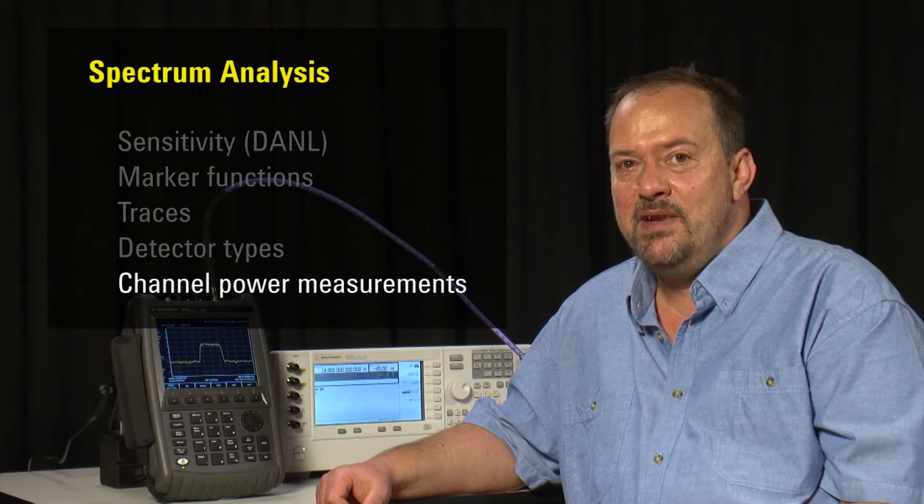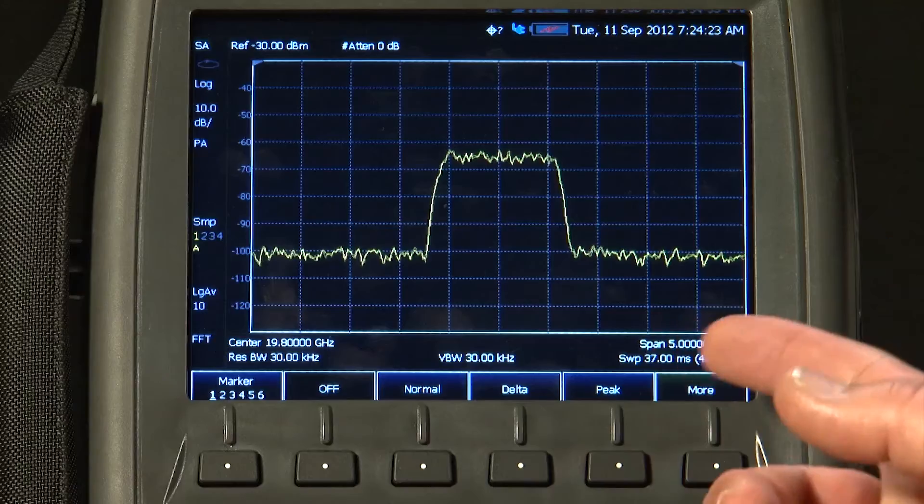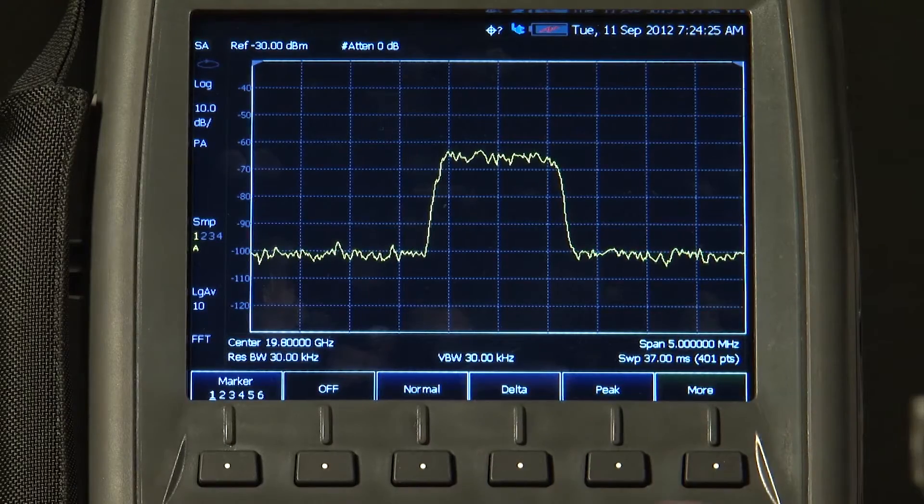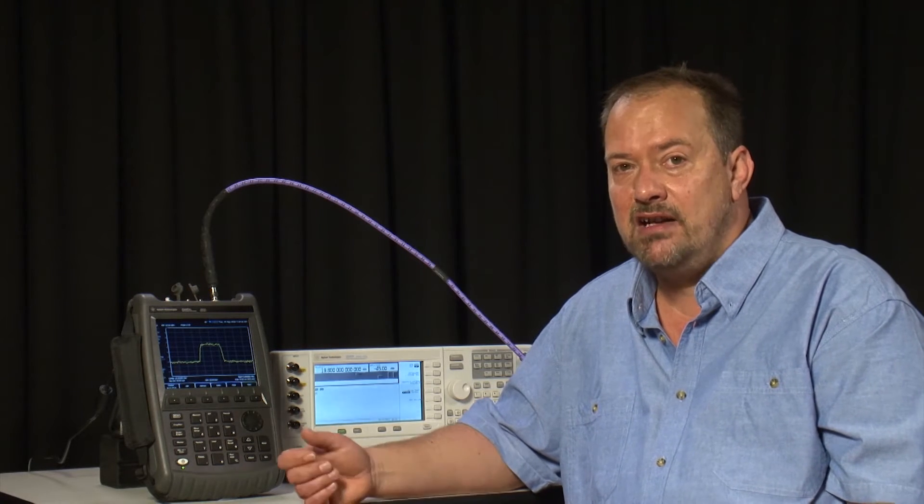Markers are great if we are measuring the amplitude of CW signals or their harmonics. But as you can see, I have now turned on some 16-QAM modulation on our 19.8 GHz signal, such as we might receive from a satellite downlink or a microwave backhaul.